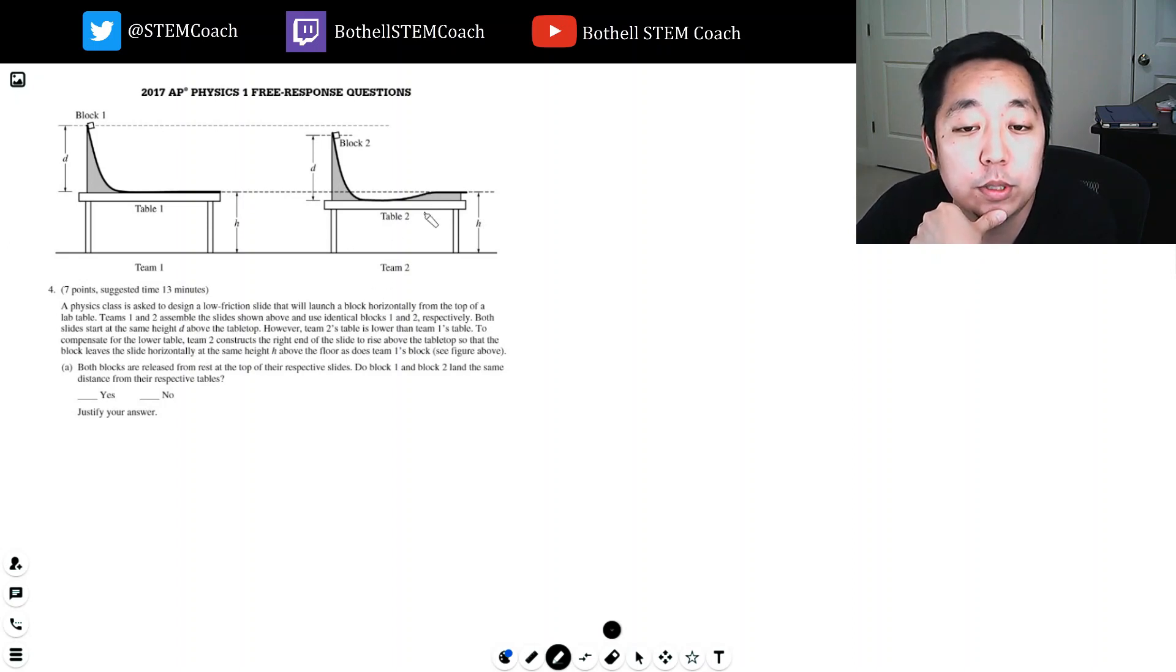However, team two's table is lower than team one's table. To compensate for the lower table, team two constructs the right end of the slide to rise above the table top so the block leaves the slide horizontally at the same height H above the floor as team one's block. Both blocks are released from the top of their respective slides. Do blocks one and two land the same distance?